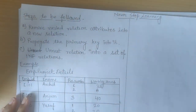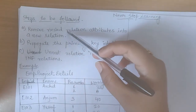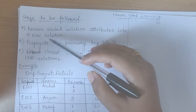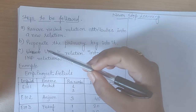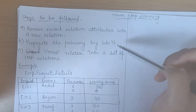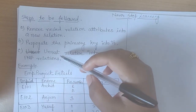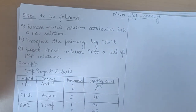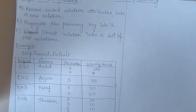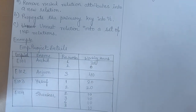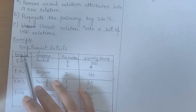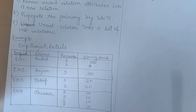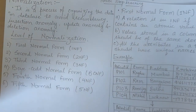The steps for converting a table to 1NF are: first, remove the nested relation attribute into a new relation — whenever we get nesting we remove it and make it atomic. Second, if there is a primary key, propagate the primary key into the new relation. Third, unnest the relation into a set of 1NF relations. Let's see an example: the employee-project details table, where employee ID is a primary key, along with employee name, project number, and working hours.